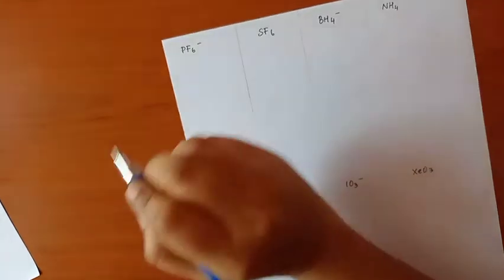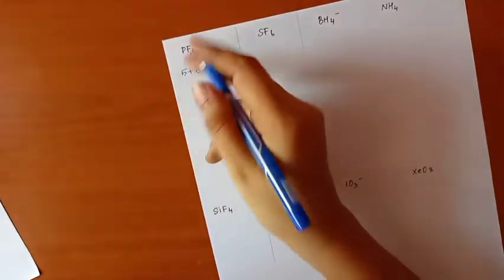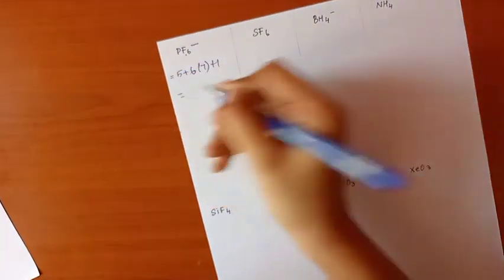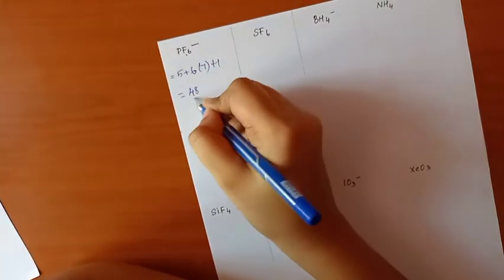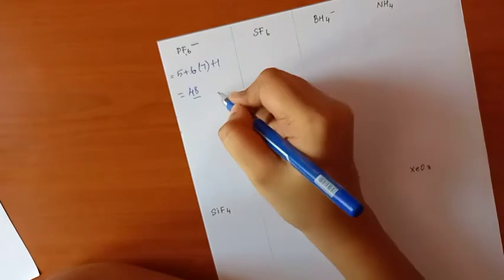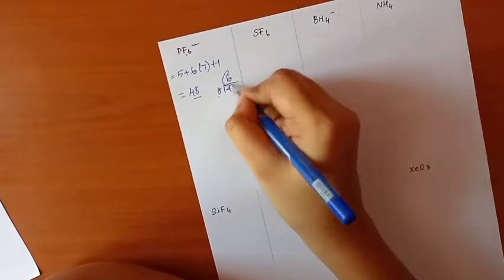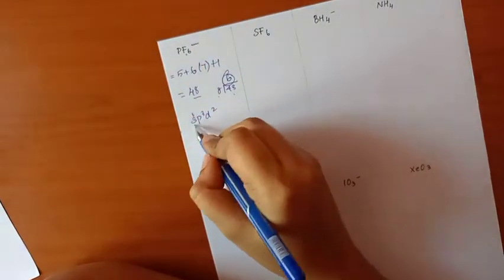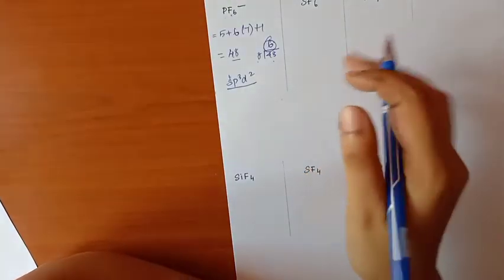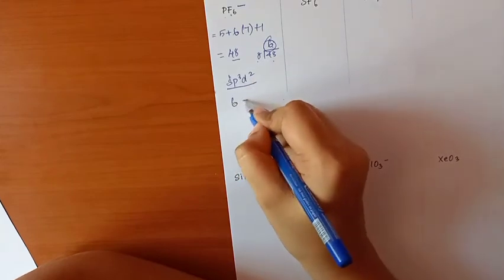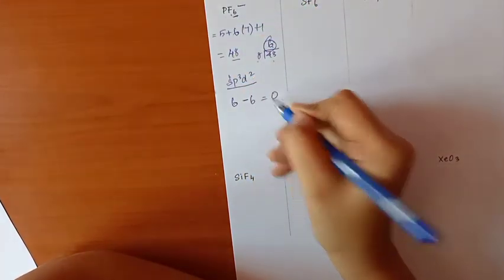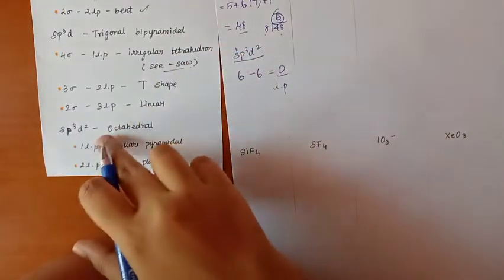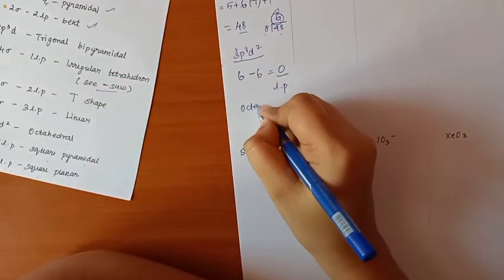Let's try PF6 minus: phosphorus is 5, plus 6 times fluorine (7) = 42, plus 1 for the negative charge = 48. Since 48 is greater than 8, divide by 8 to get 6. That means SP3D2 hybridization (1+3+2=6). Lone pairs = 6 minus 6 surrounding atoms = 0. So SP3D2 with 0 lone pairs is octahedral structure.